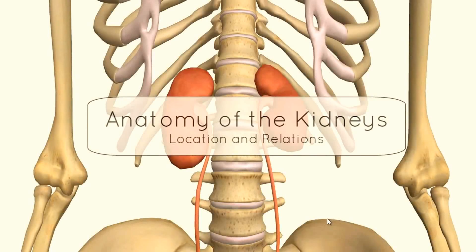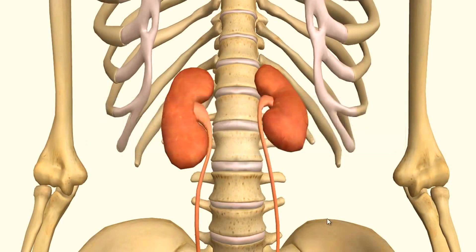This tutorial is on the kidneys. I'm going to talk about the relations of the kidneys — its location and relation to other structures in the abdomen — and some of the external features of the kidneys. In another tutorial, I'll talk about the internal structure of the kidneys.